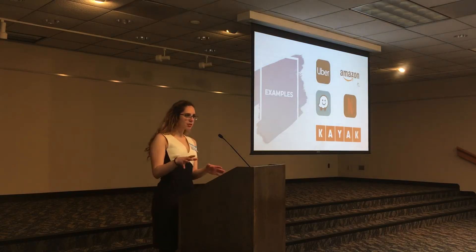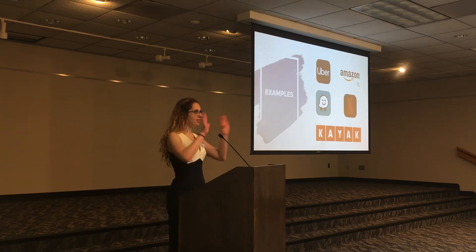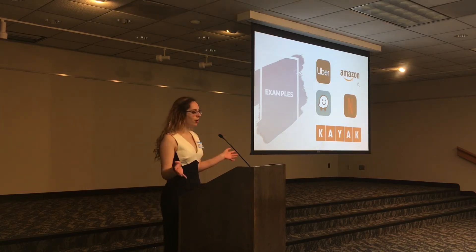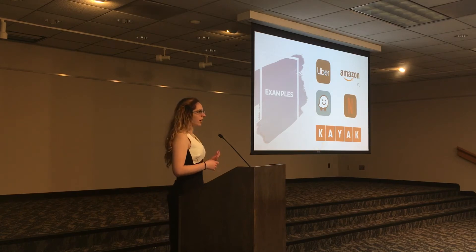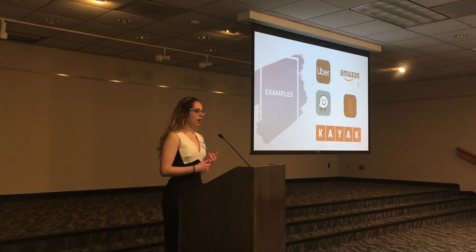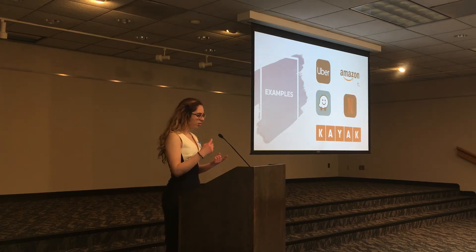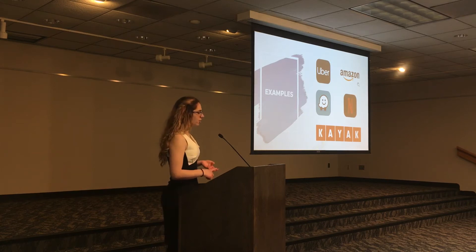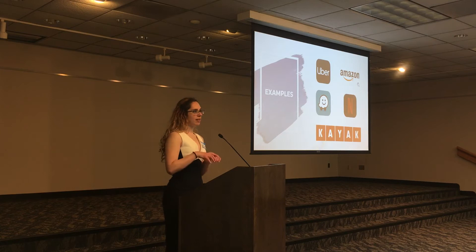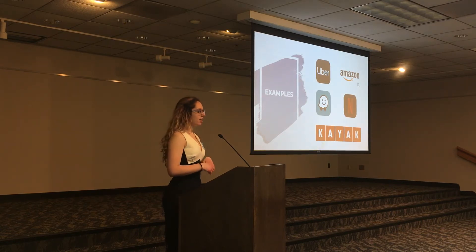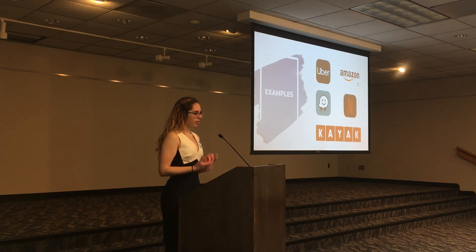I'm going to talk about a few examples so you have a better understanding of how this applies in the real world. Uber, for example, has a routing algorithm that helps you get from place to place. In order to give an accurate estimated time of arrival to drivers, they take into account traffic conditions, the weather, and other factors — those are the parameters. They're optimizing to get you somewhere as quickly as possible, and the constraint is within whatever geographic area you've specified.